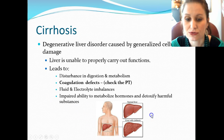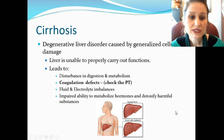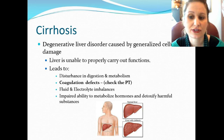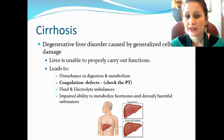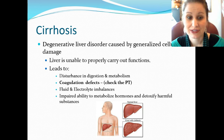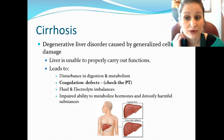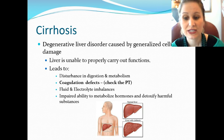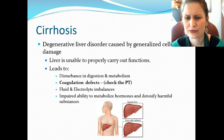Cirrhosis of the liver is a degenerative liver disorder caused by generalized cellular damage — the liver isn't able to carry out all its functions. This leads to disturbances in digestion and metabolism, coagulation defects (prolonged PT, risk for bleeding), fluid and electrolyte imbalances, and impaired ability to metabolize hormones and detoxify harmful substances — putting the body at major risk.